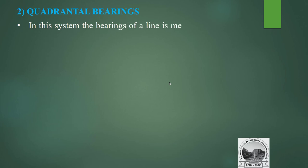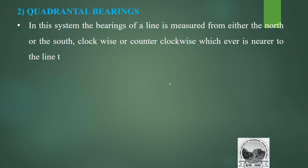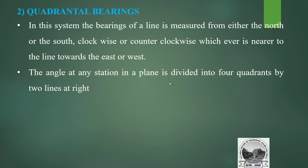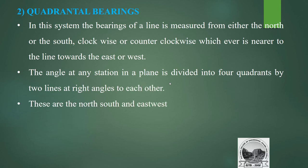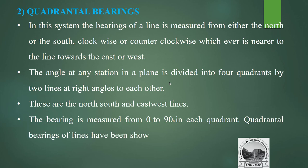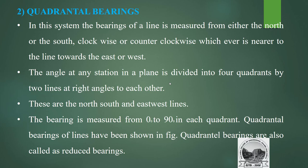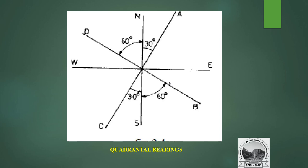In the quadrantal bearing system, the bearing of a line is measured from either north or south — clockwise or counterclockwise — whichever is nearer to the line, toward the east or west. The angle at any station is divided into four quadrants by two lines at right angles: the north-south and east-west lines. The bearing is measured from 0° to 90° in each quadrant. Quadrantal bearings are also called reduced bearings.